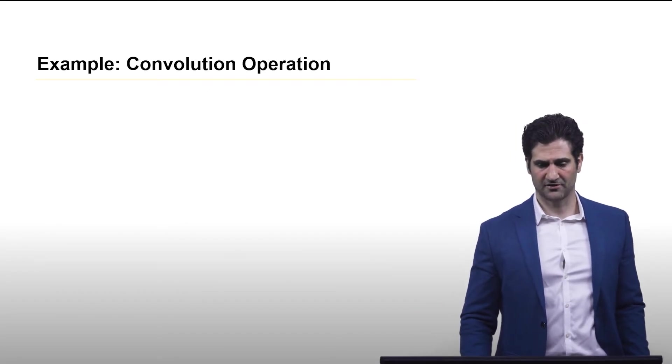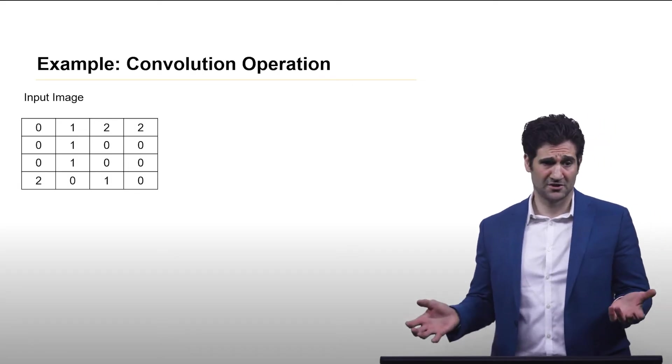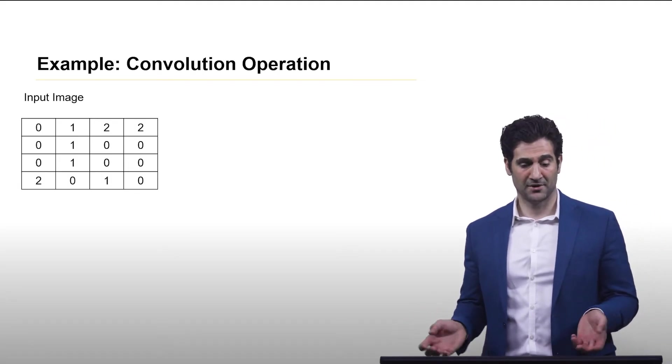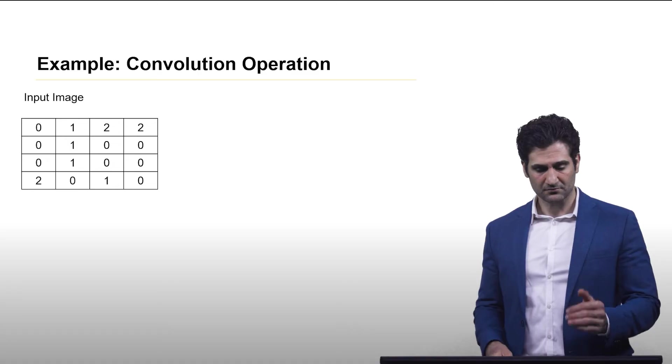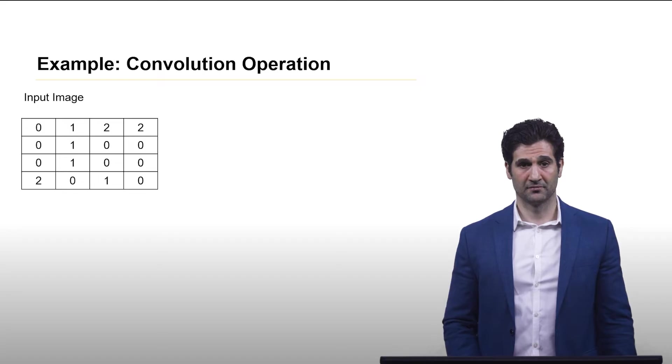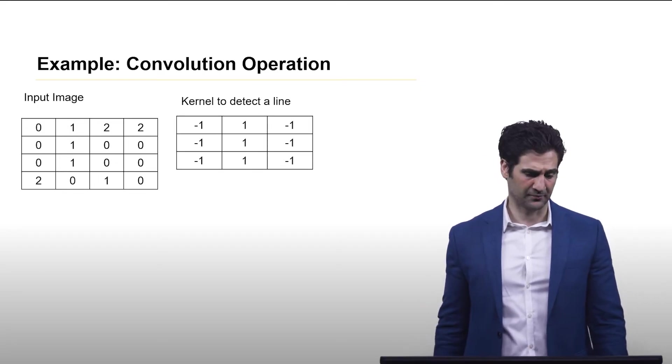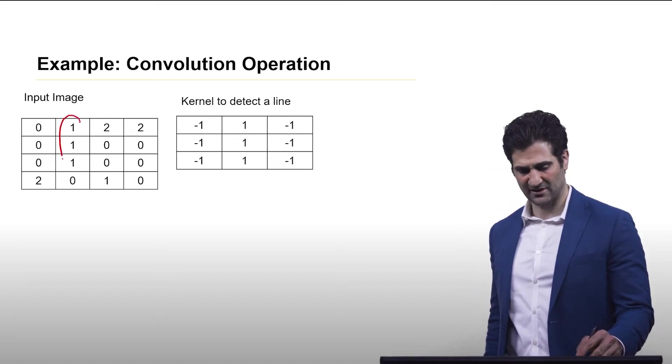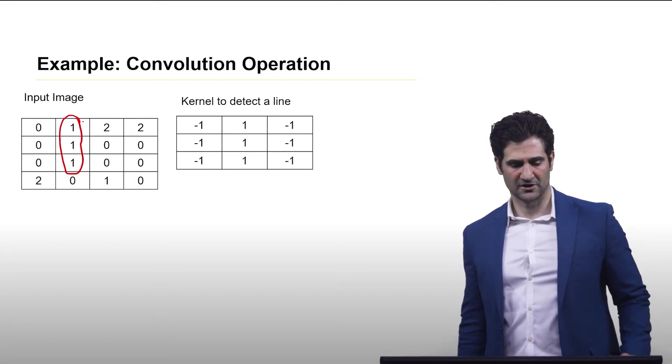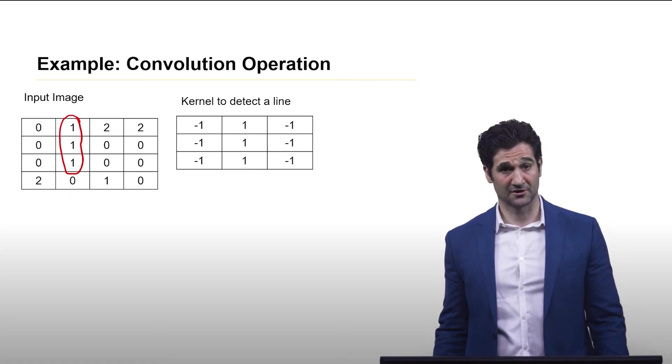So let's give an example of this. This is an example image. An image is just a collection of pixels that have different values and here we have a couple different values in this grid. And here is a kernel to detect a line. You can see in the example there looks like there's a line right here, maybe in the upper left quadrant of the picture.